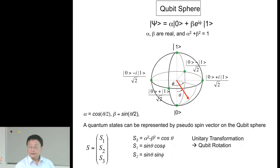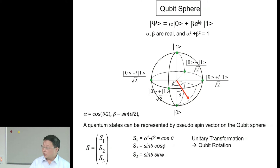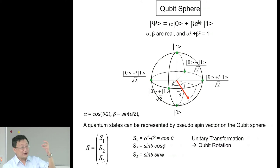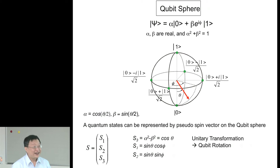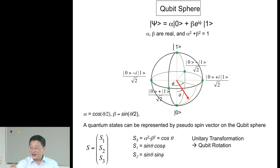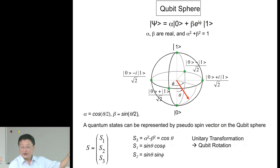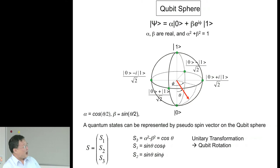For one qubit, the Hilbert space is spanned by two states, and there's another representation called the Bloch sphere. It's like when you're turning Takoyaki with a stick — you are doing a qubit rotation right there. Any quantum computation operation on the qubit is equivalent to a Bloch sphere rotation. So on this two-level system, every state can be represented as a unit vector forming the Bloch sphere.